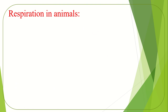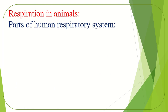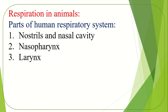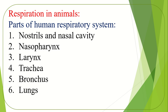Respiration in animals — parts of the human respiratory system. Number one: nostrils and nasal cavity. Number two: nasopharynx. Number three: larynx. Number four: trachea. Number five: bronchus. Number six: lungs. Number seven: diaphragm. These seven parts of the human respiratory system must be memorized.